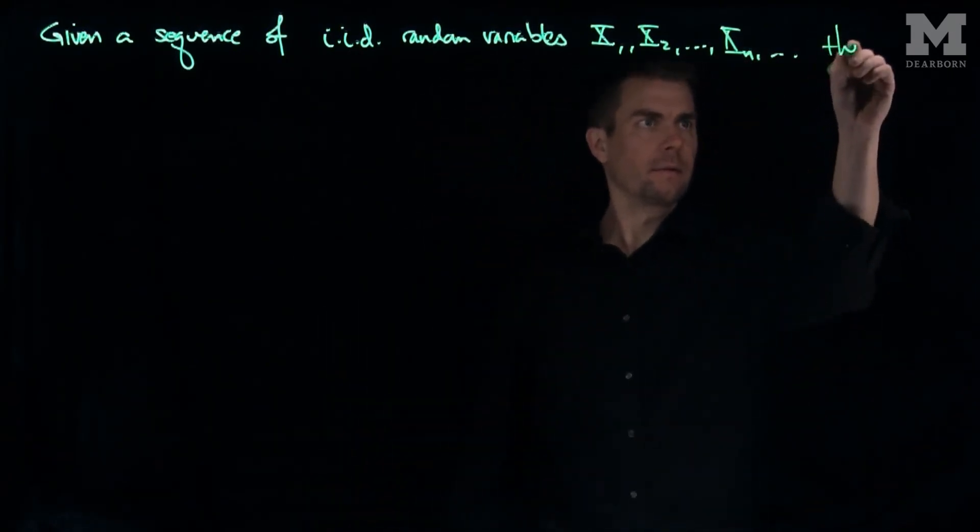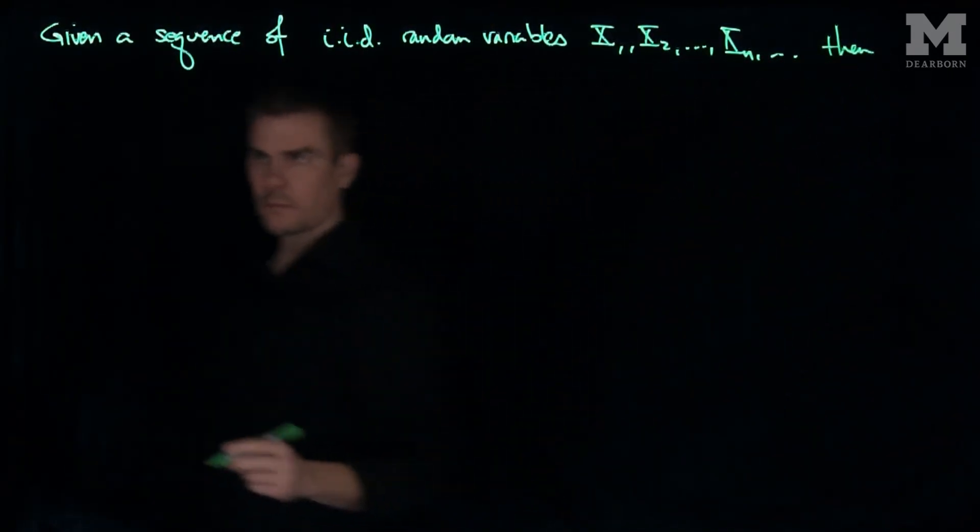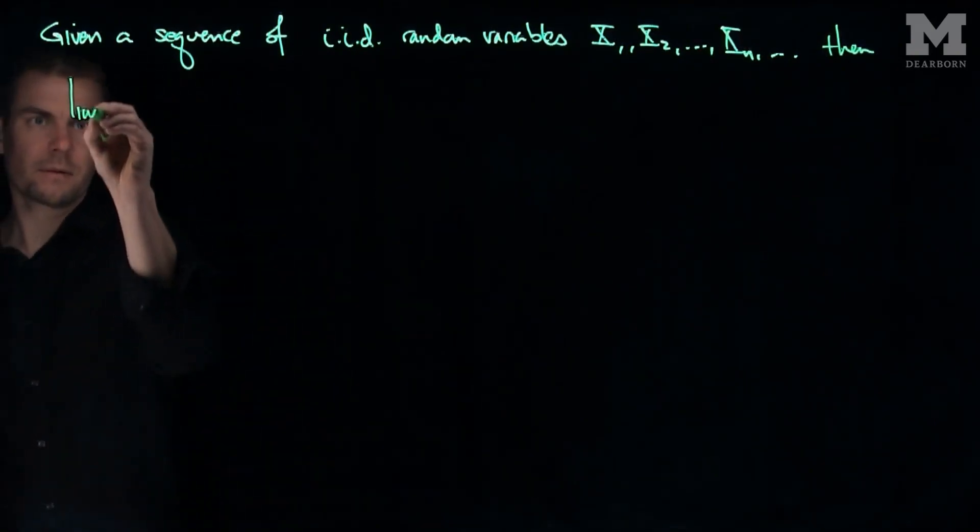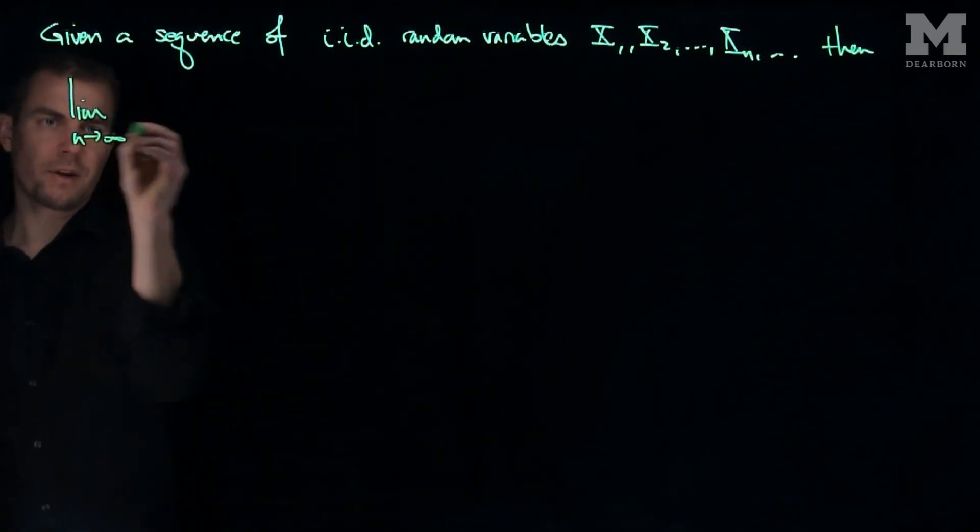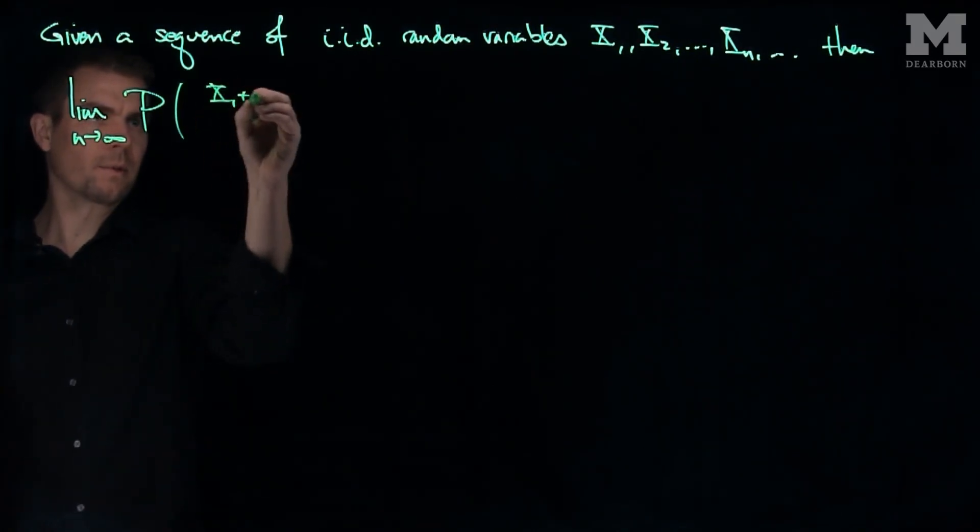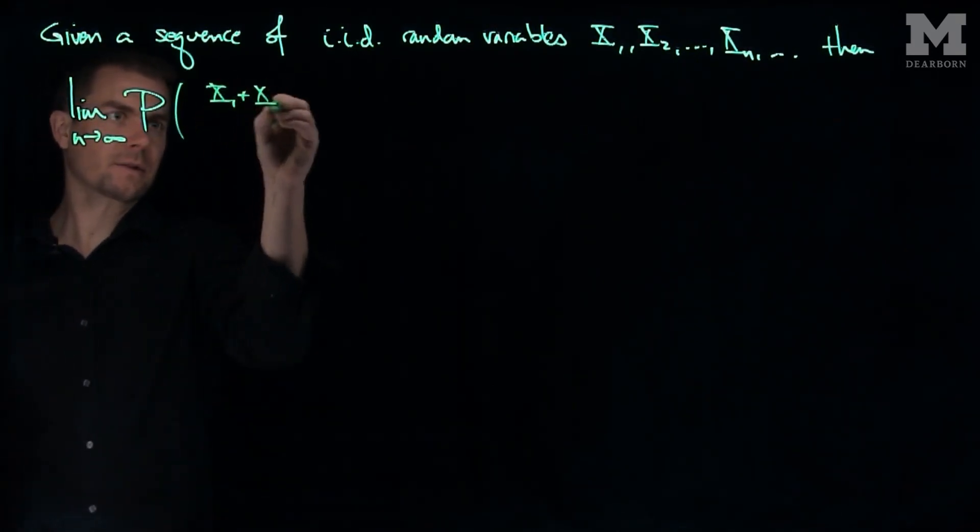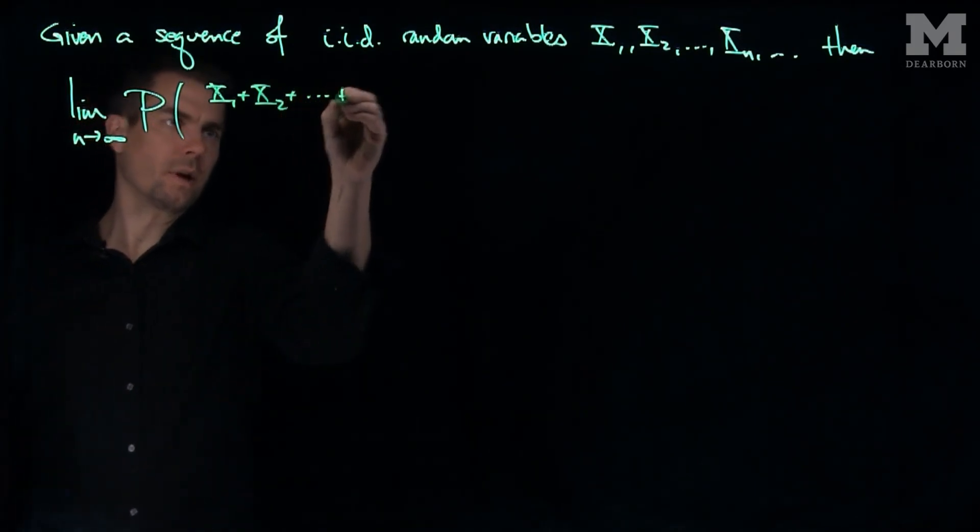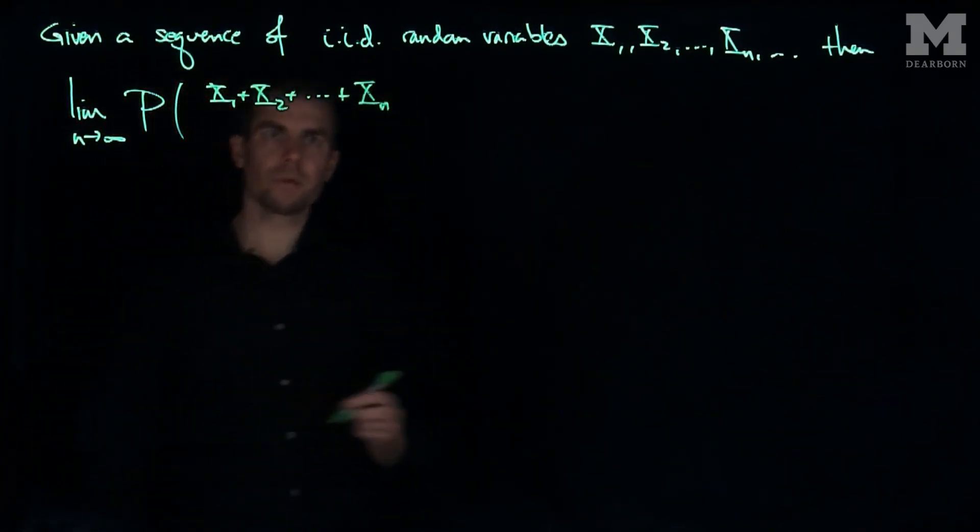Then the limit as n goes to infinity of the probability that x1 plus x2 plus xn, so I add up the first n of those random variables.